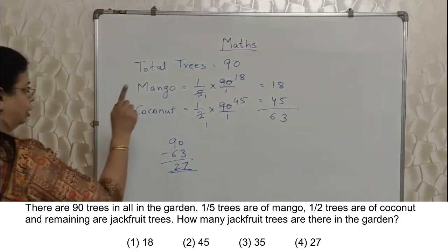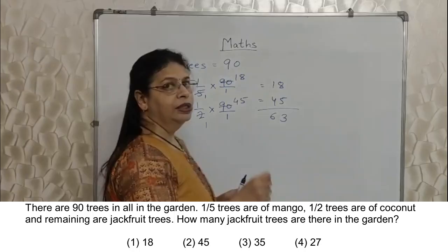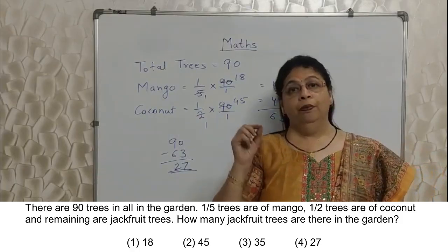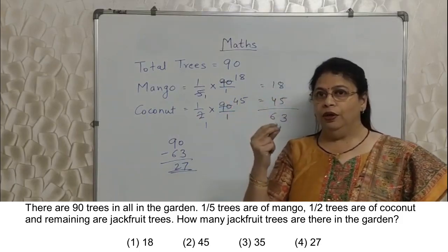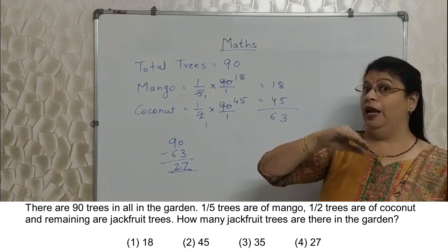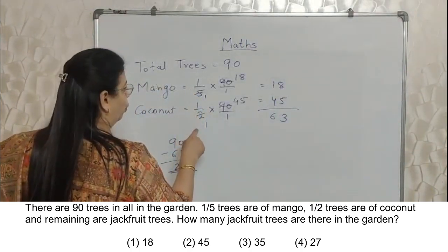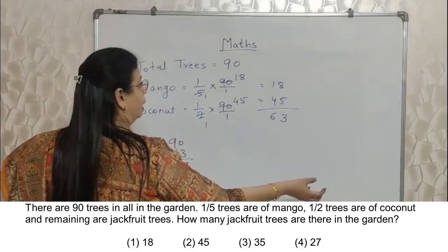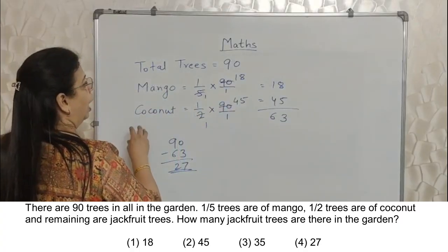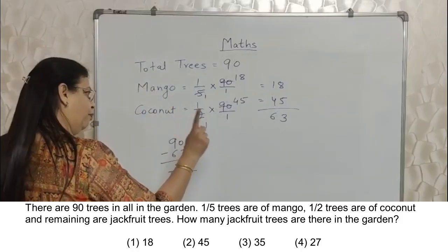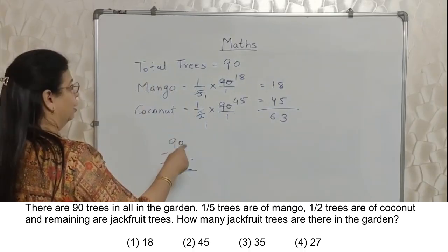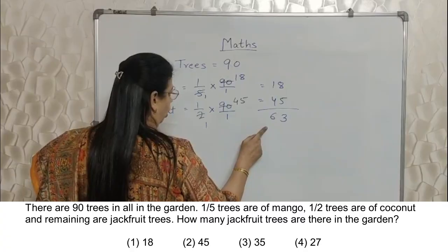Very easy. Here also, as I keep on telling you, same question can be solved in multiple ways without hampering the accuracy of the answer. But here we are focusing on time factor. So smartest way, fastest way. But if this sum has to be done with fractions' help, we can do 1 upon 5 plus 1 upon 2, make the denominators same, add them, and then find out jackfruit's fraction and the number of trees. That is systematic way of doing it step wise. But here in competitive exams, time plays a very important role.